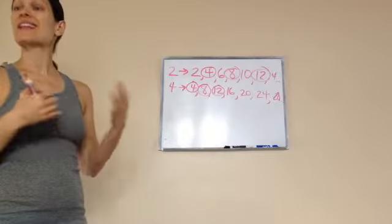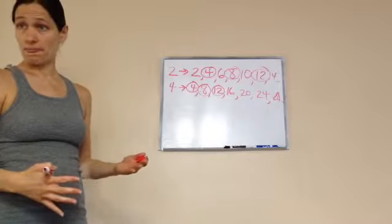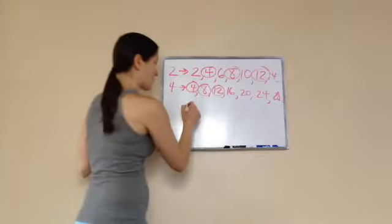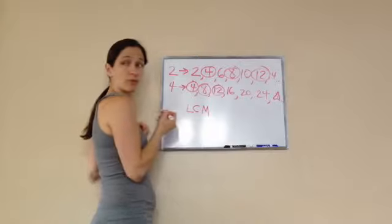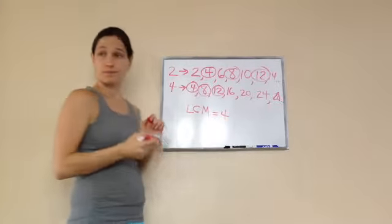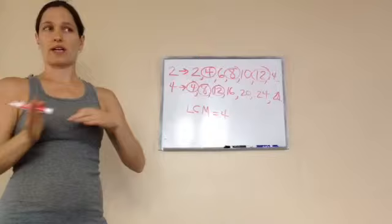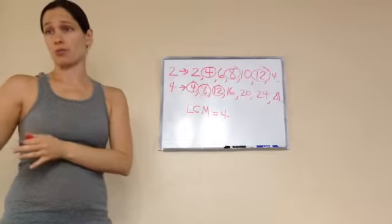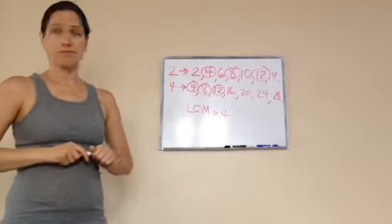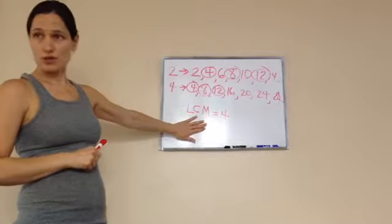I've got a 4, a 4, an 8, an 8, a 12, a 12. I'm going to stop there because we're wanting the least common multiple. So that would be 4. The answer is LCM equals 4. Is there a greatest common multiple? Nope, there's always a greatest common factor and a least common multiple.